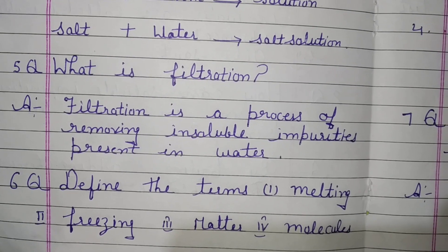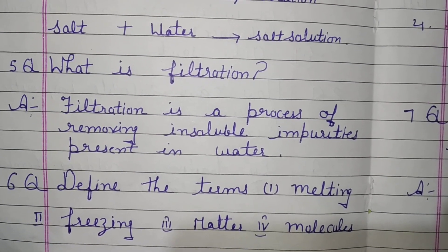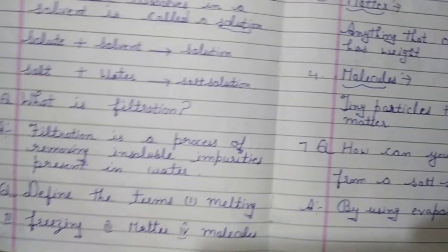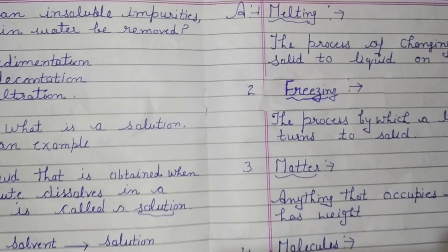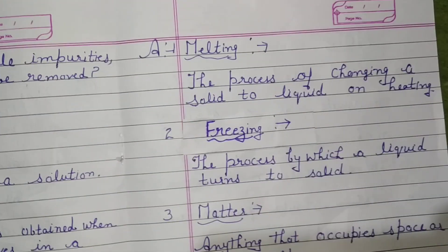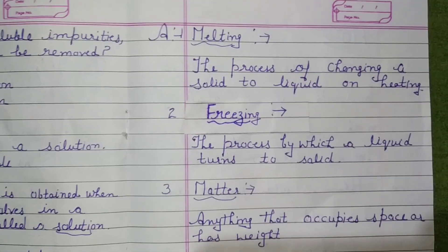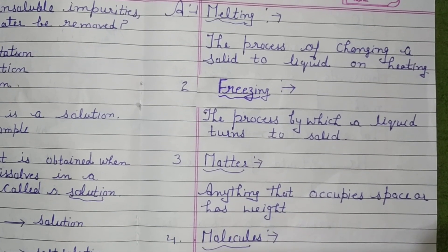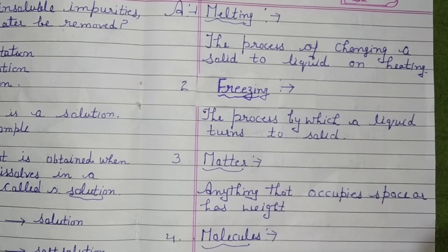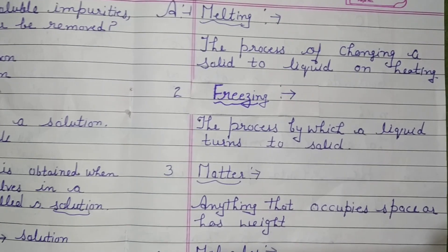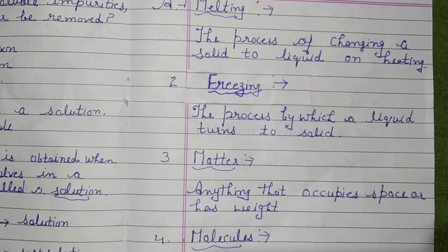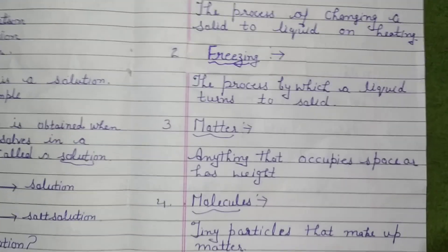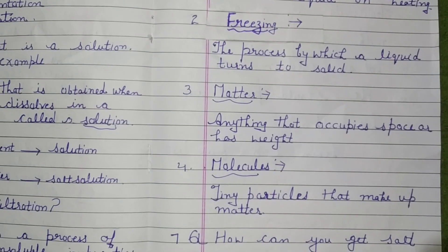Sixth question: Define the terms — melting, freezing, matter, molecules. Answer: 1. Melting: The process of changing a solid to liquid on heating. 2. Freezing: The process by which a liquid turns to solid is called freezing.